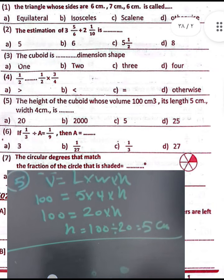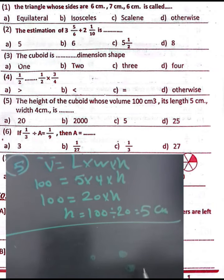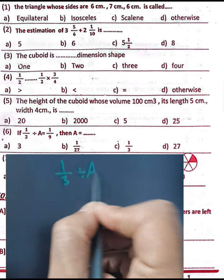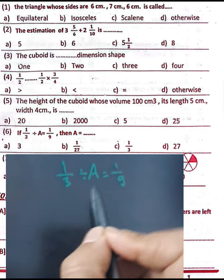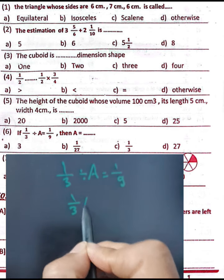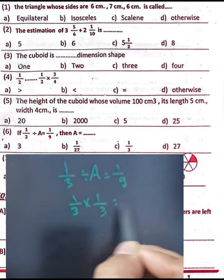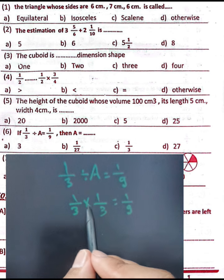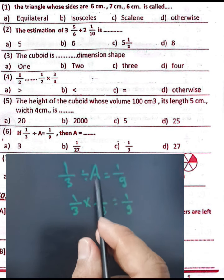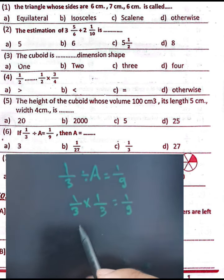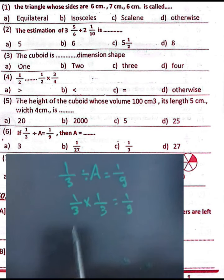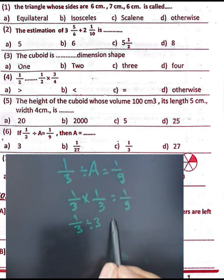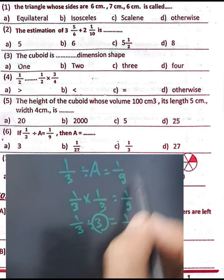Question number six: one-third divided by e equals one-ninth. Converting from division to multiplication, one-third times one over e equals one-ninth. To solve, you take the reciprocal, so e equals 3. One-third divided by 3 equals one-ninth. Therefore the value of e equals 3.